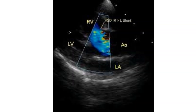Color Doppler echo in TOF: the blue colour represents the flow of blood from the right ventricle across the ventricular septal defect into the overriding aorta. This causes desaturation of aortic blood and cyanosis in Tetralogy of Fallot.